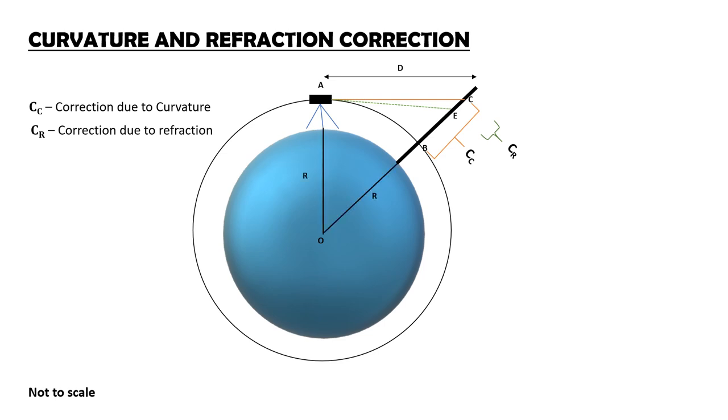Now you can see a right triangle nicely formed over here. As you can see, in triangle OCA, OC square is equal to OA square plus AC square.